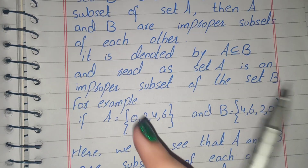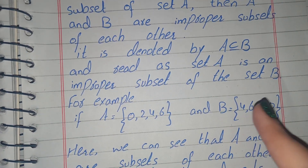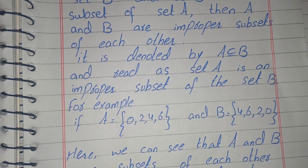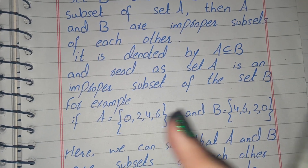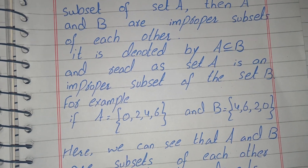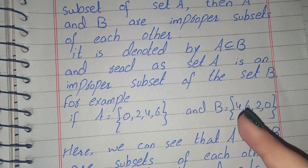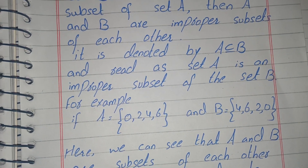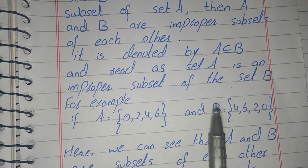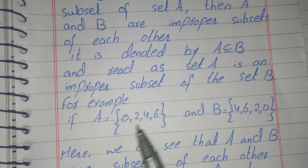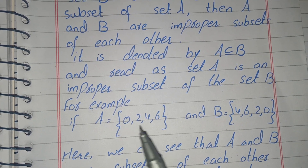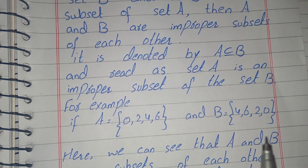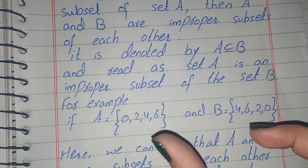The concept of improper subset is that if A is a subset of set B and set B is also a subset of set A — meaning all elements of set A are also elements of set B, and all elements of set B are also elements of set A. For example, elements of set A are 0, 2, 4, 6 and elements of set B are 4, 6, 2, 0 — all elements are the same.